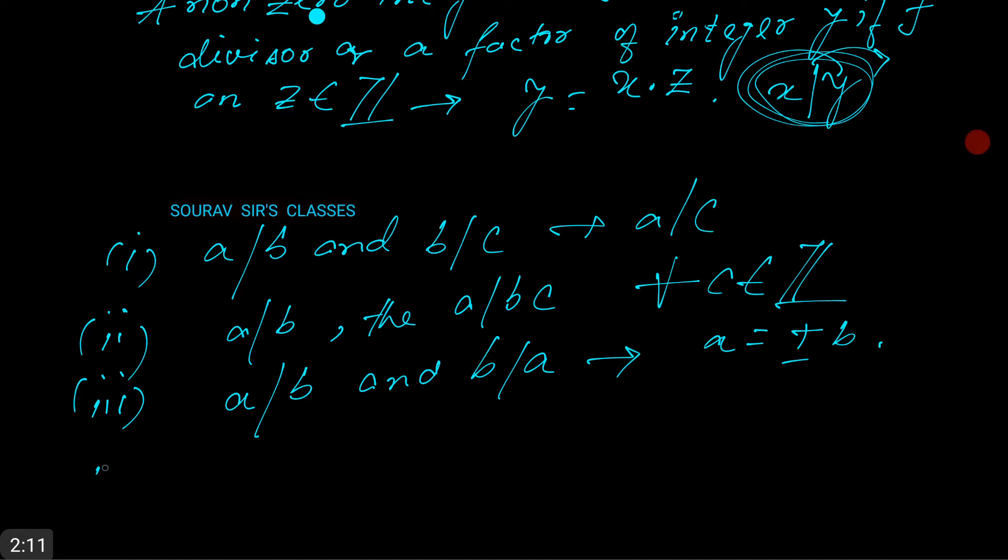And four is: if a divides b and a divides c, then a divides bx plus cy for arbitrary x, y belongs to Z.